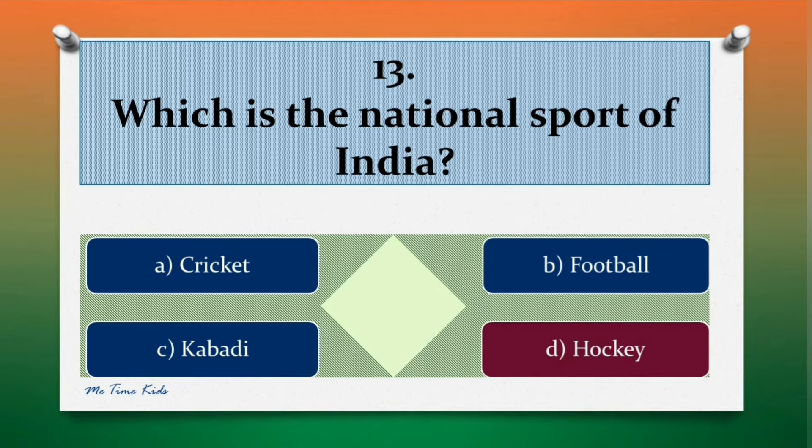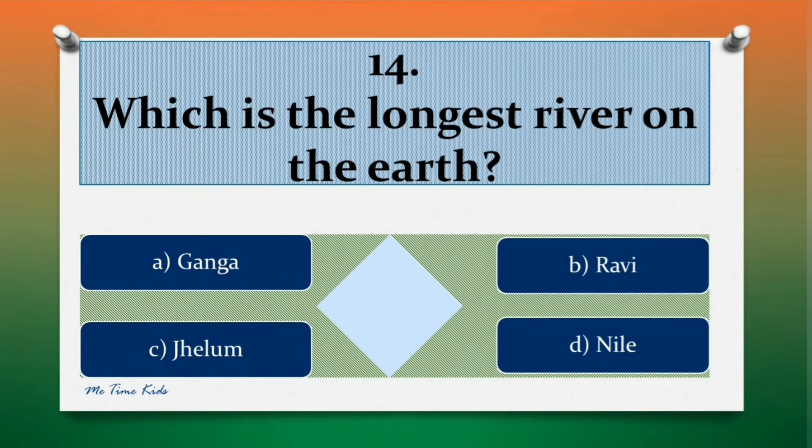Question 14. Which is the longest river on the earth? Options are: a. Ganga, b. Ravi, c. Jhelum, d. Nile. Correct answer is d. Nile.